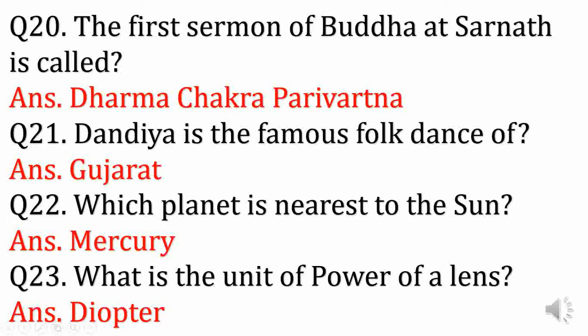Which planet is nearest to the sun? Answer: Mercury. What is the unit of power of a lens? Answer: Diopter.